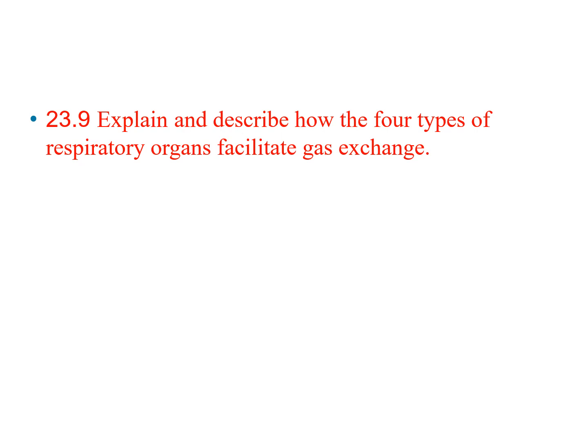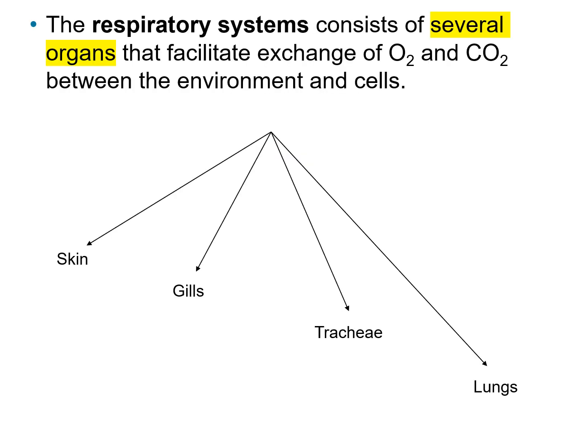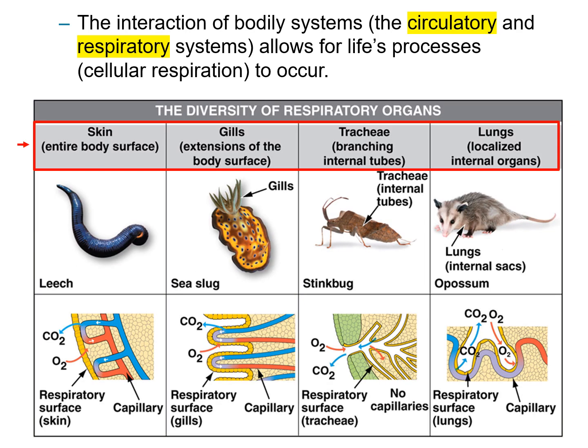Next objective: explain and describe how the four types of respiratory organs facilitate gas exchange. We're going to talk about four respiratory systems consisting of several organs that facilitate the exchange of gases — oxygen coming in and CO2 coming out. Those four are the skin, the gills, the tracheal system, and lungs. The interaction of the circulatory system and the respiratory system allows cellular respiration and ATP production from glucose to take place.